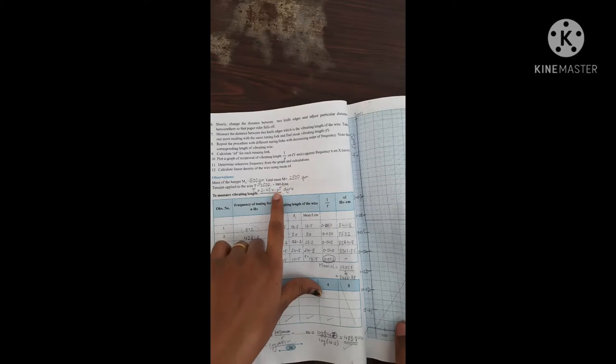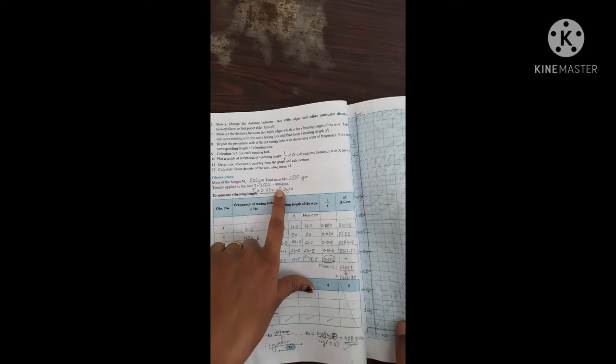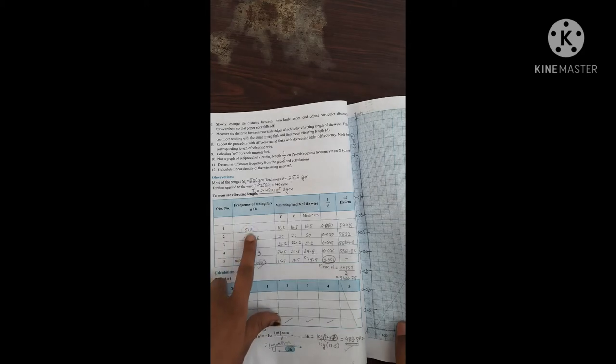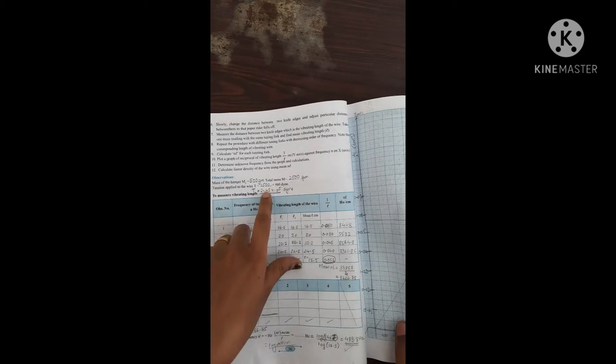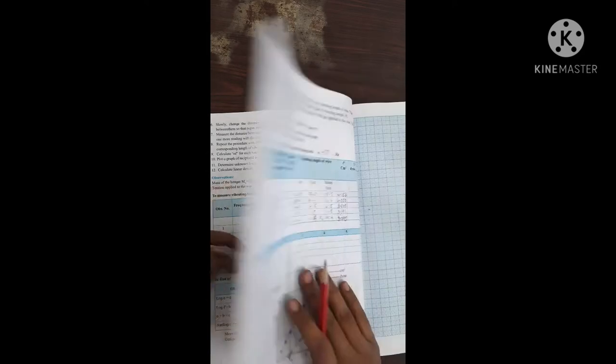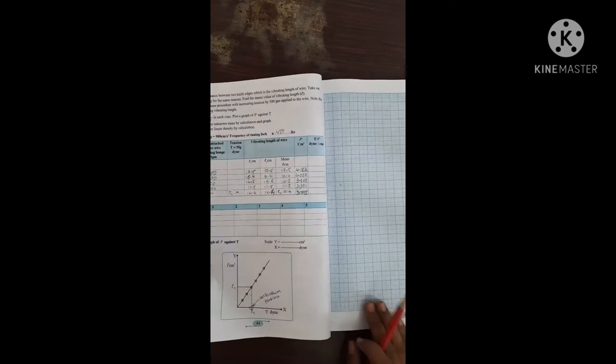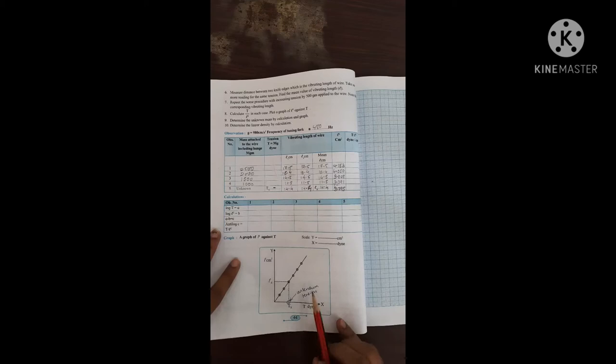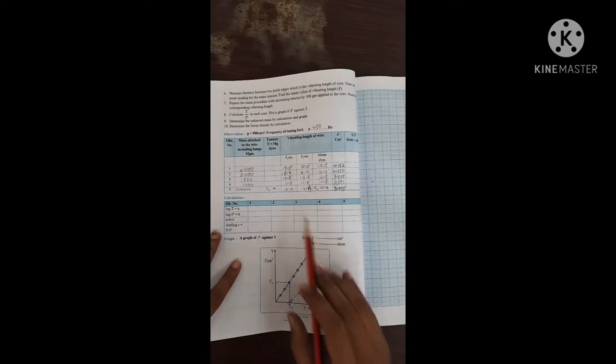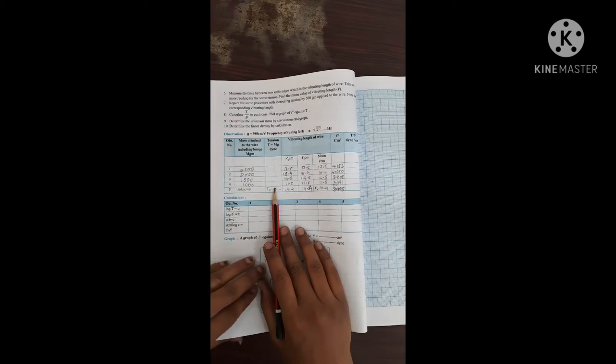Yesterday I have told you how to write it. I have written in the terms of power. Same thing you have to write, 2.45. We have taken the frequency for 512. So here 2.45 into 10 to the power 5, in this way only you have to write it because this tension column you have to take over here on x-axis.